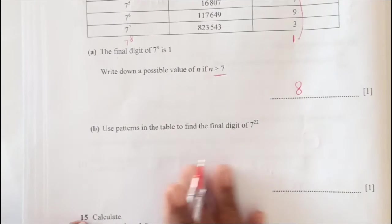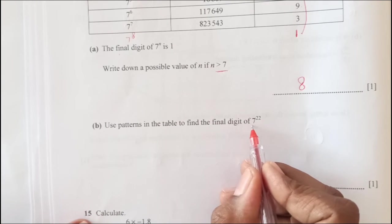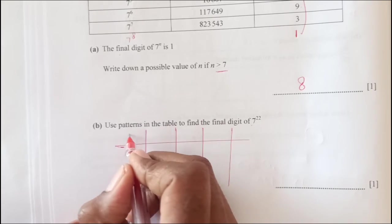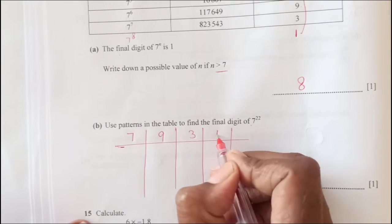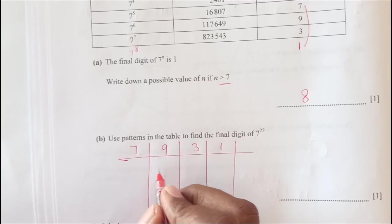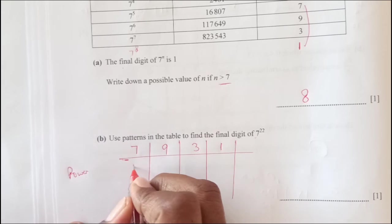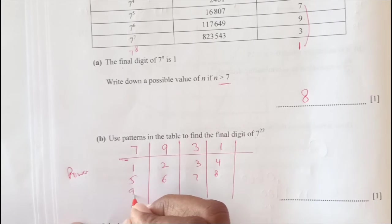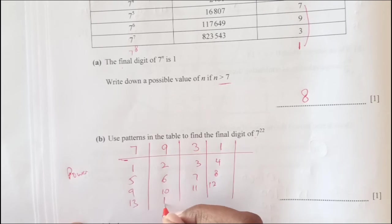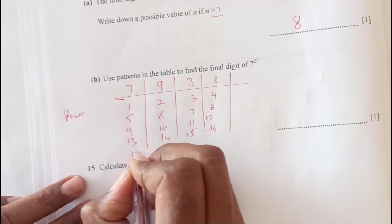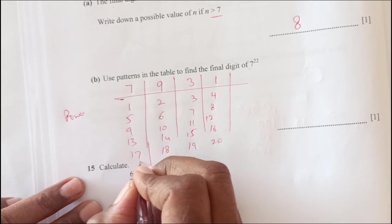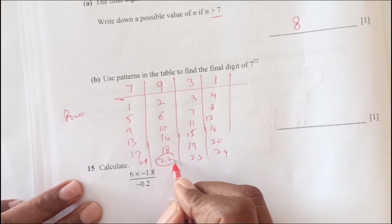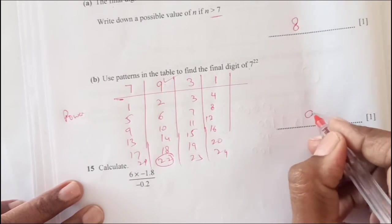By looking at this pattern, now use pattern in the table to find the final digit of 7 power 22. Let us just make the pattern first. First digit we are getting 7, 9, 3, and 1. Powers of 7 are 1, then 2, 3, 4, then 5, 6, 7, 8, 9, 10, 11, 12, 13, 14, 15, 16, 17, 18, 19, 20, then 21, 22, 23, and 24. We are looking for 7 power 22 which is here, so the digit is going to be 9.